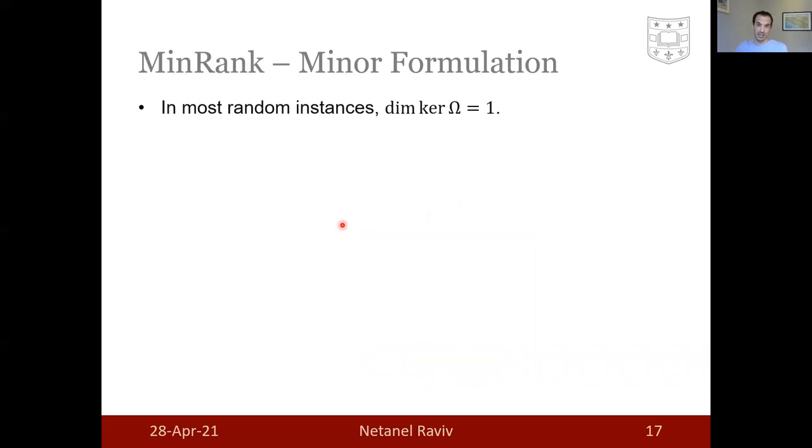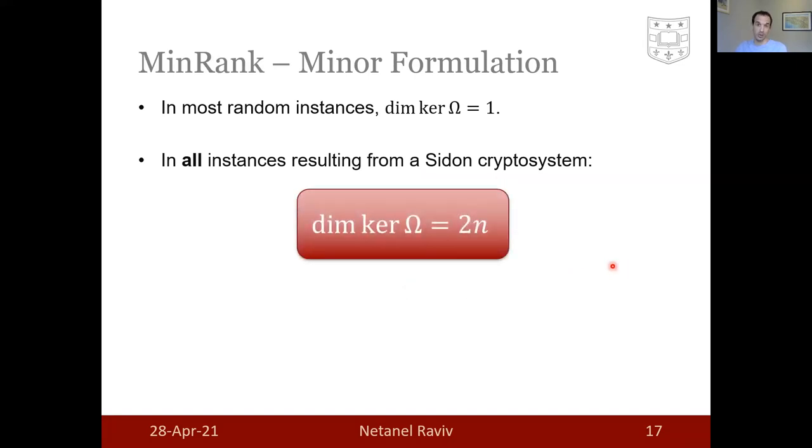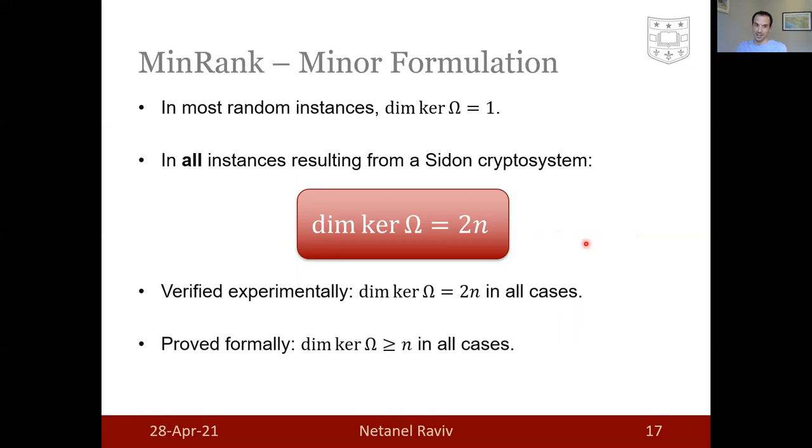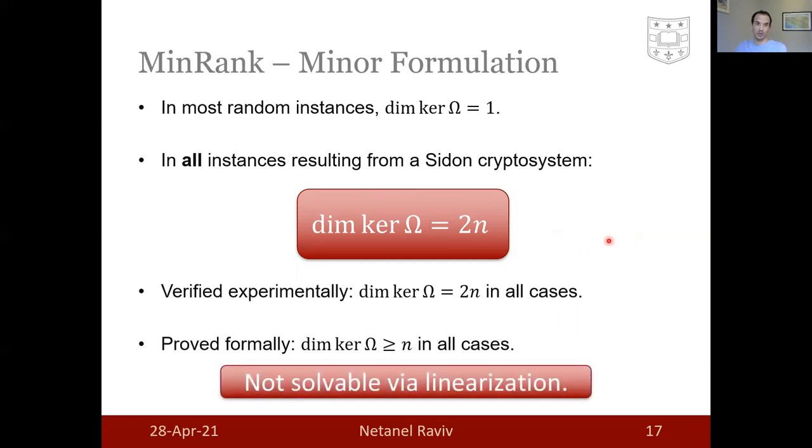In most random instances, linearization works in the minor formulation, and the dimension of the kernel would indeed be one. In all instances resulting from Sidon cryptosystem, we have the dimension of the kernel omega equals 2n. To put it more formally, we have verified experimentally for any value of q and every value of k that the dimension of the kernel is 2n. We have been able to partially explain that mathematically, and we showed that for every q and k, the dimension of the resulting kernel of omega is at least n. Meaning there is no straightforward way to solve the minor formulation of the min rank problem via linearization.